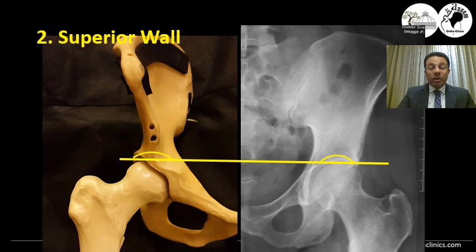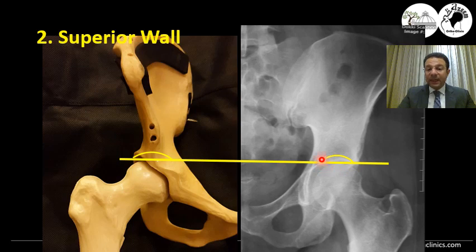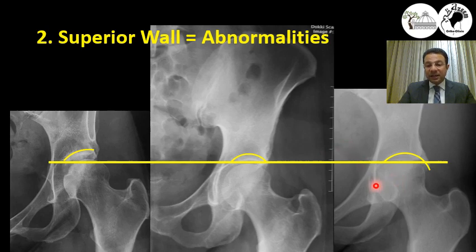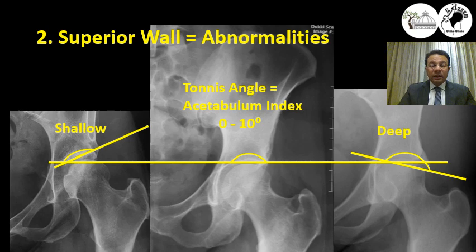The superior wall, or the dome, or the superior covering part of the acetabulum, corresponds to a radiographic line that starts and ends on the same level. This sclerotic area covering the head should start and end at two points on the same level. If you have a shallow acetabulum, it will end in what we name a positive angle. If you have over-coverage or a head deep inside the socket, the acetabulum will be covering more of the head and it would end in a negative point. This is measured using a tonnis angle, or acetabular index. The normal acetabular index ranges from 0 up to 10 degrees positive.